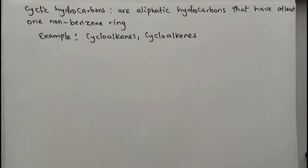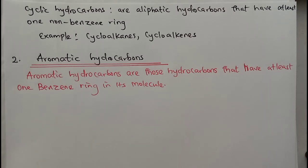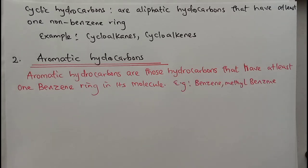Now let's go for aromatic hydrocarbons — it's very simple. Aromatic hydrocarbons are those hydrocarbons that have at least one benzene ring in each molecule. Examples include benzene and methylbenzene.